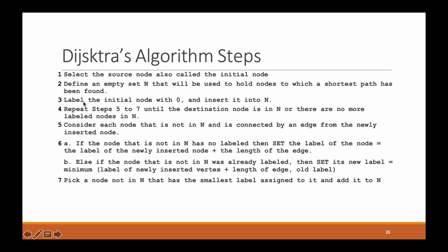The way it works: we first select the source node, also called the initial node. We define an empty set N that will hold nodes to which a shortest path has been found. We label the initial node with zero, because the distance from that node to itself is zero, and insert it into N. We repeat steps five to seven until the destination node is in N or there are no more labeled nodes. We consider each node not in N that is connected by an edge from the newly inserted node. If that node has no label, we set its label to the label of the newly inserted node plus the length of the edge — giving us the total cost of the path from the source node to that specific node.